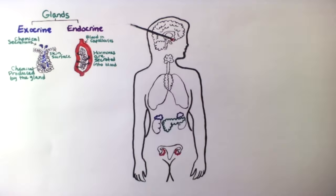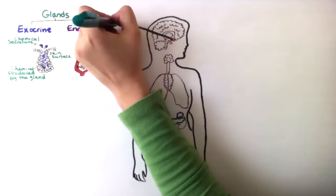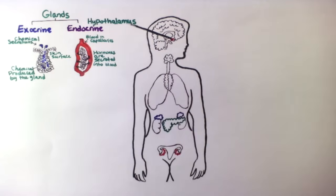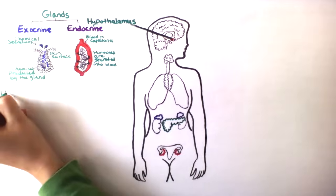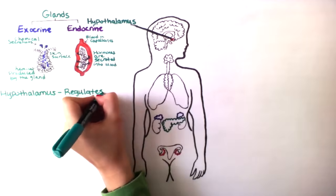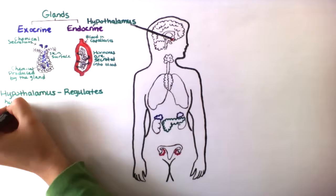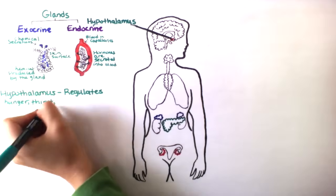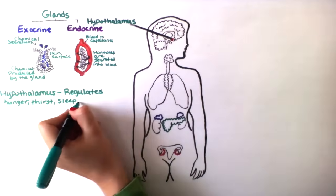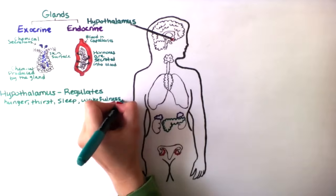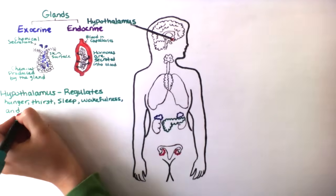We will start with the hypothalamus, the master control gland in the brain. It is located in the forebrain directly above the pituitary gland. The hypothalamus regulates hunger, thirst, sleep, wakefulness, and body temperature.